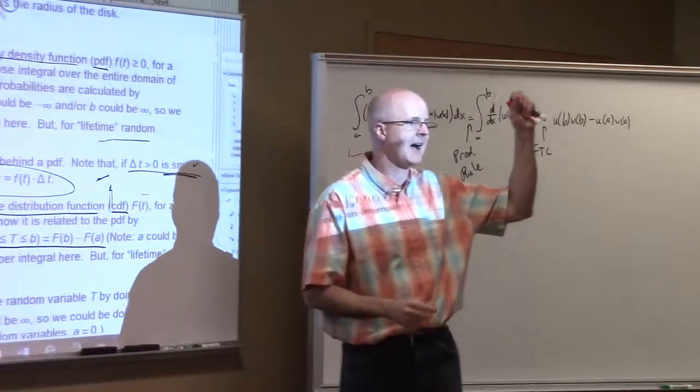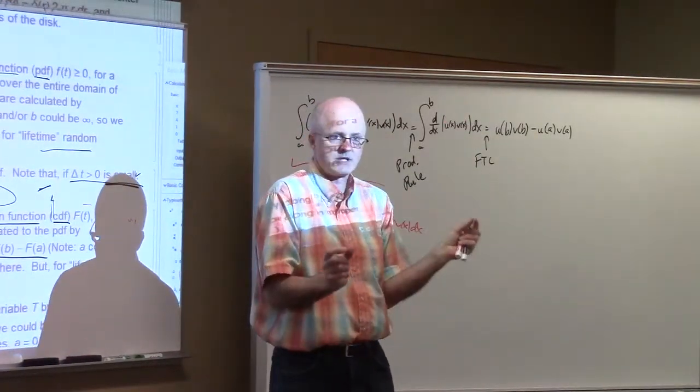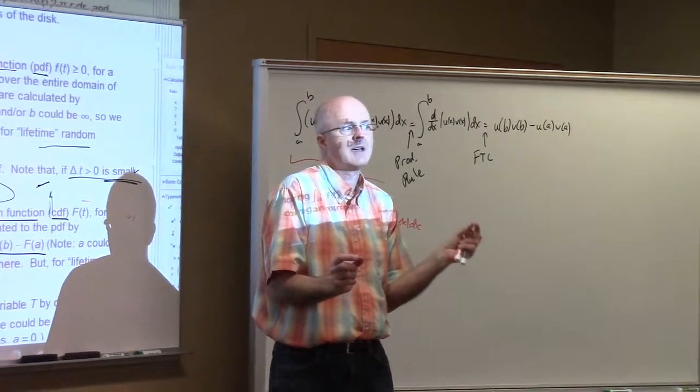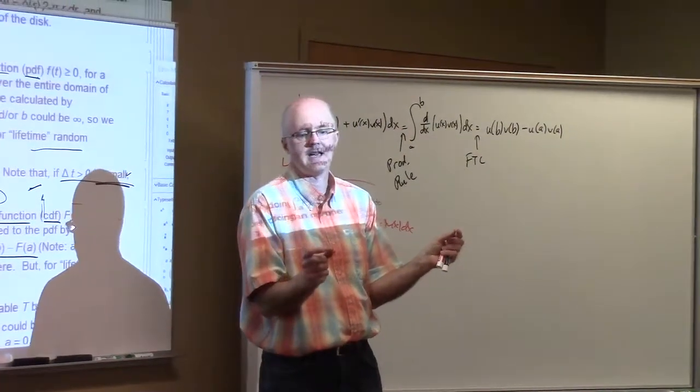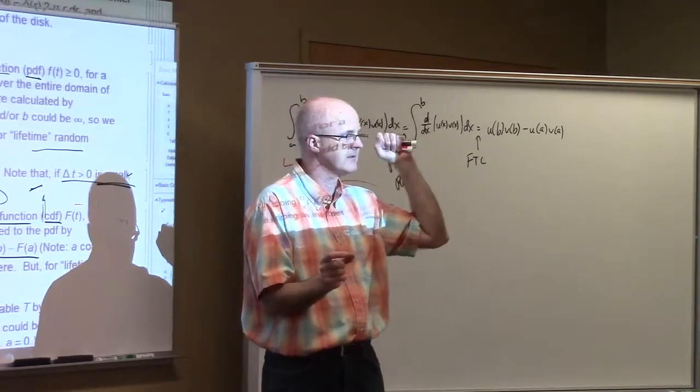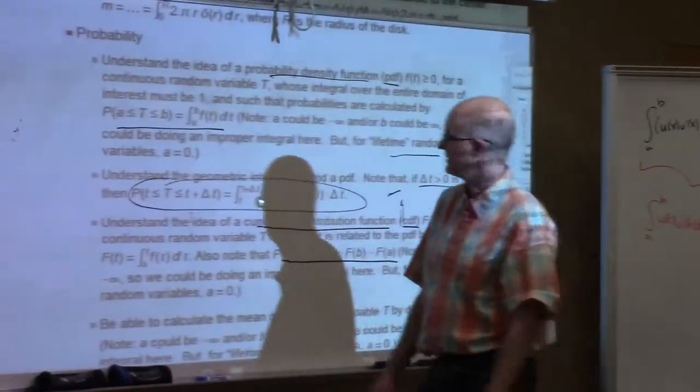So if the PDF is twice as high when you're 80 years old as when you're 40 years old, over a small time interval like a tenth of a year, your chance of dying from 80 to 80.1 is twice as high as dying from 30 to 30.1. So I haven't mentioned that yet, but I thought it was worth mentioning now.